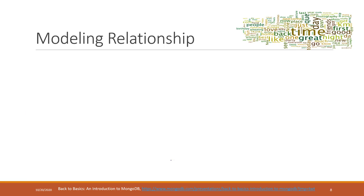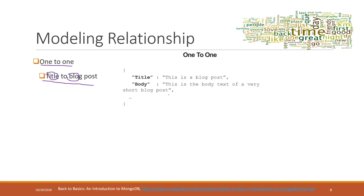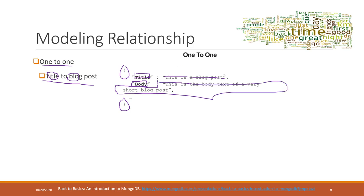For a one-to-one relationship, we simply put all entities in one document using separate key-value pairs. For example, if we are talking about blog posts and each blog has a title, the relationship is one-to-one. In MongoDB, we organize the data by putting everything in one document with two key-value pairs: the title key with the title value, and the body key with the body value.